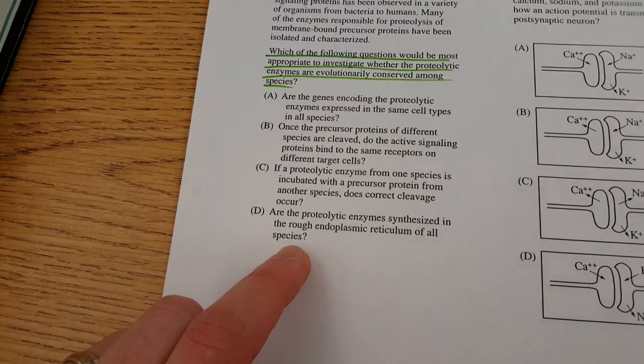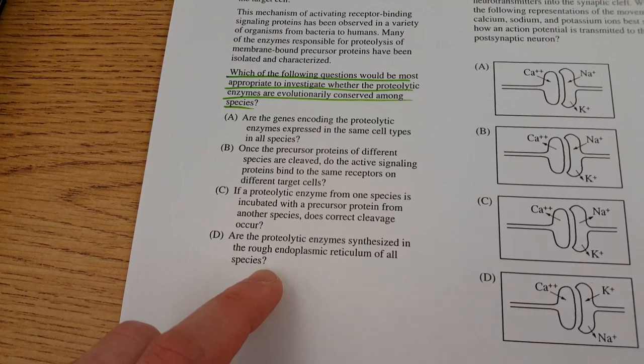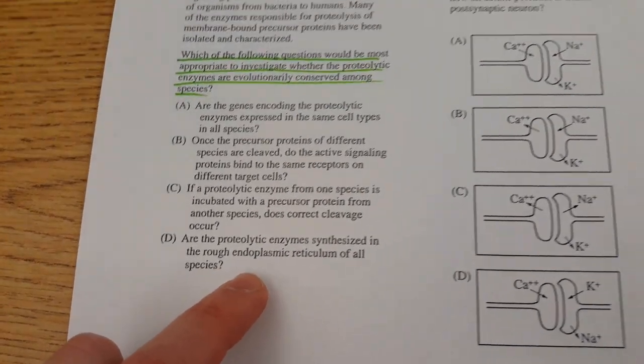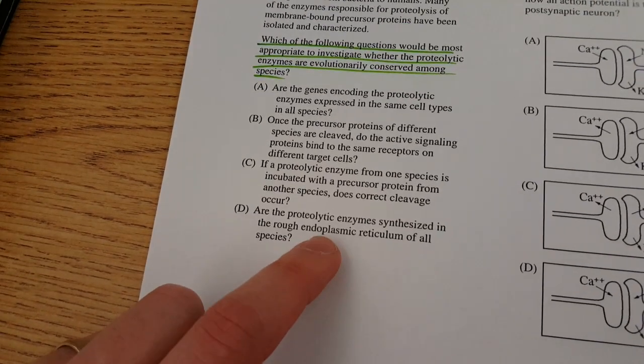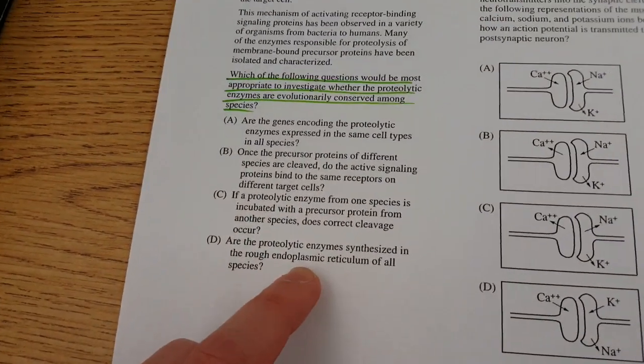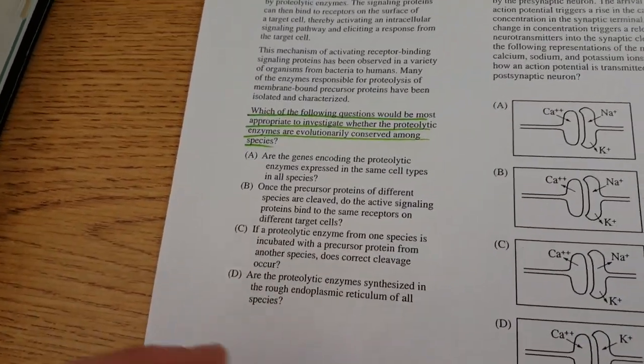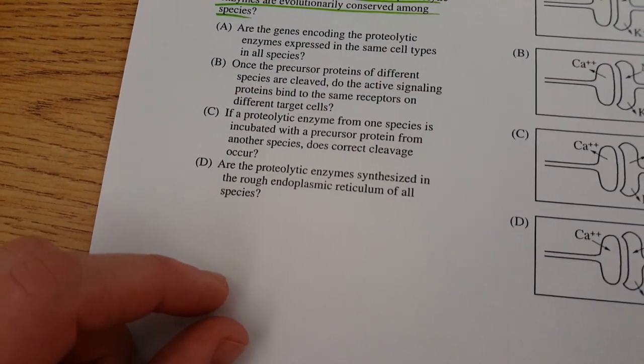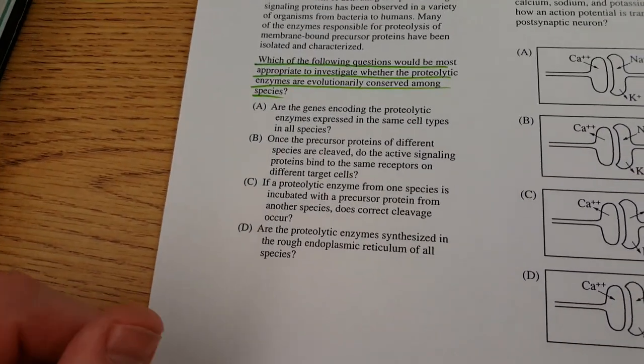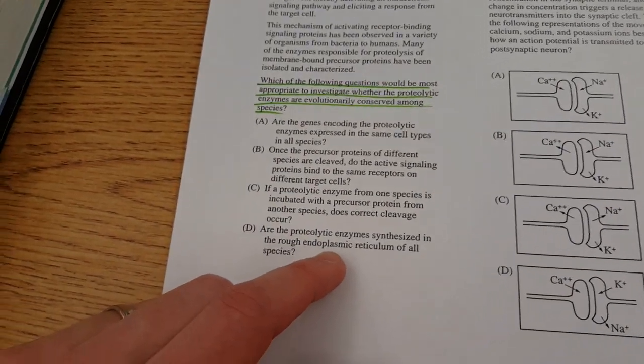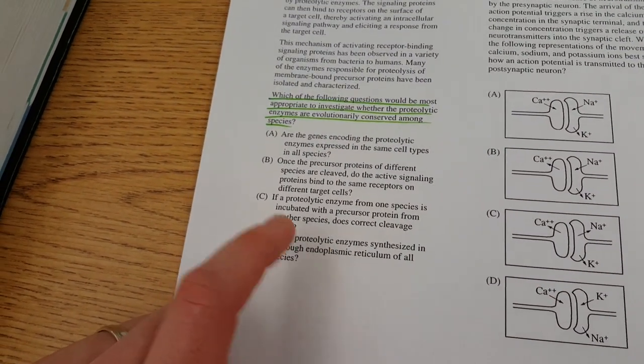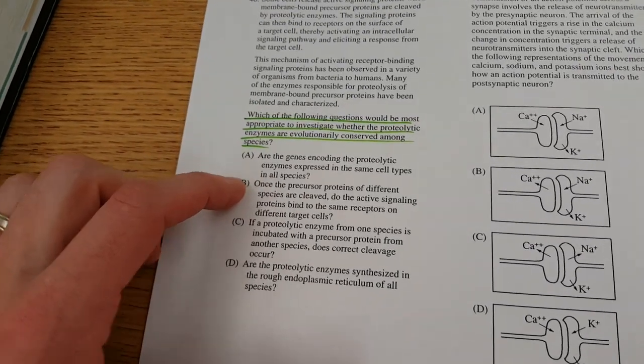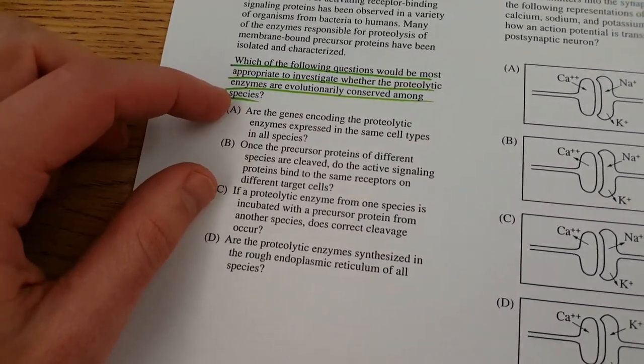Letter D says, are the proteolytic enzymes synthesized in the rough endoplasmic reticulum of all species? Well, if we knew that this was an enzyme that was synthesized in the ER, well, maybe, but not all enzymes are. In fact, not all proteins are. A lot of them are simply synthesized in or at ribosomes that are just free floating in the cytoplasm. So of course, the ER is a place of protein synthesis, but not necessarily of all proteins or all enzymes. So D, we're throwing away. B, we're definitely throwing away. And we're left with A and C.